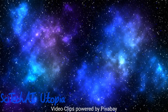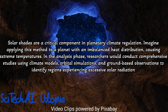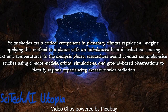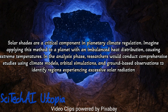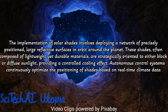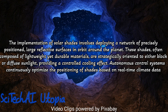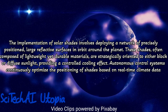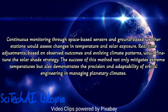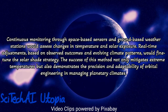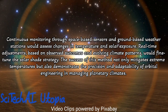Method 8: Solar Shades. Design and deploy a network of solar shades or sun shields in space to intercept and partially block incoming sunlight. Consider the optimal size, shape, and placement of the shades to balance the reduction of solar radiation with potential impacts on planetary temperature and climate. Develop a sophisticated control system to adjust the position and orientation of the shades dynamically, accounting for the planet's orbit, rotation, and seasonal variations. Address potential challenges such as unintended temperature imbalances through advanced modeling and continuous monitoring, and establish protocols for periodic maintenance and potential repositioning.